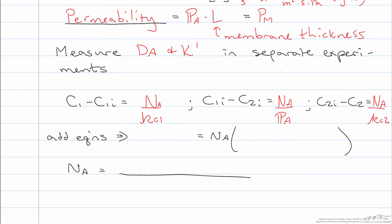So if we add up these equations, the intermediate concentrations at the interface disappear, and we end up with C1 minus C2 is equal to the flux times 1 over KC1 plus 1 over the permeance plus 1 over KC2. And then rearranging we get an equation for the flux, which is like a resistance in series equation.